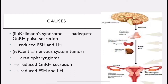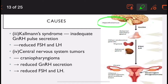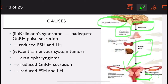Central nervous system tumors such as craniopharyngioma — a benign tumor located near the pituitary and hypothalamus — will reduce GnRH secretion, resulting in reduced FSH and LH and ultimately amenorrhea. Normally, the hypothalamus releases GnRH, which acts on the anterior pituitary to release FSH and LH, which act on the ovaries resulting in normal menstruation.